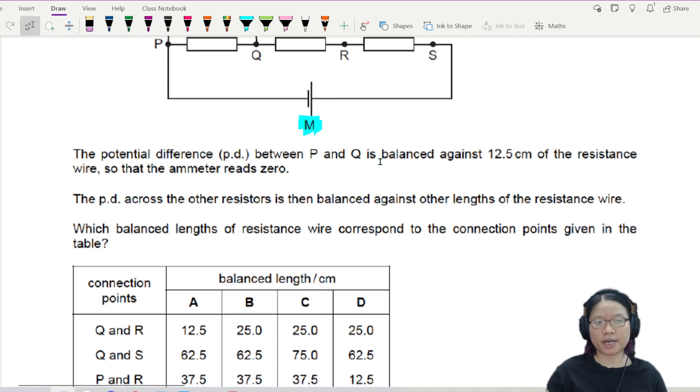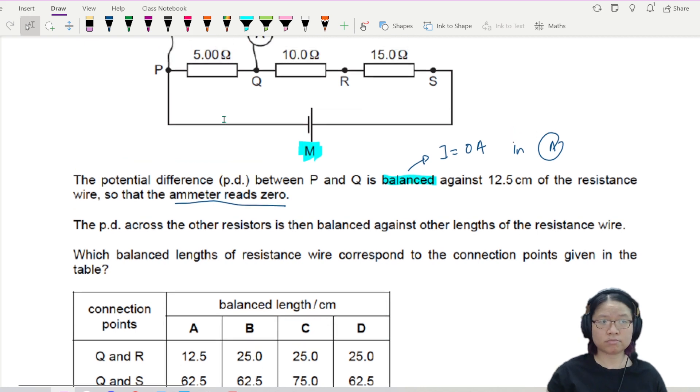The potential divider between P and Q is balanced. My favorite word is balance as all things should be balanced. Means that the current is zero ampere in the ammeter. Ammeter reading is very nice. Potential difference across the other resistor is then balanced against the length of the resistance wire.